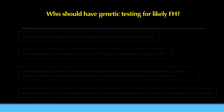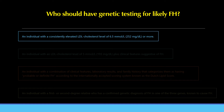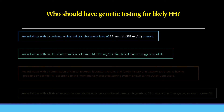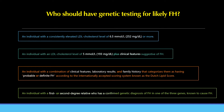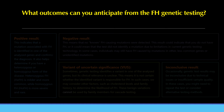Who should have genetic testing for likely FH? Genetic testing is indicated for: an individual with a consistently elevated LDL cholesterol level of 6.5 mmol/L or more; an individual with an LDL cholesterol level of 5.0 mmol/L plus clinical features suggestive of FH; an individual with a combination of clinical features, laboratory results, and family history that categorizes them as having probable or definite FH according to the Dutch Lipid Score; or an individual with a first- or second-degree relative who has a confirmed genetic diagnosis of FH in one of the three causative genes.